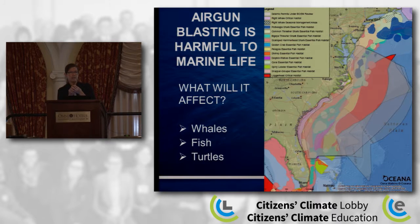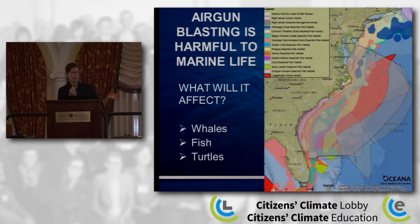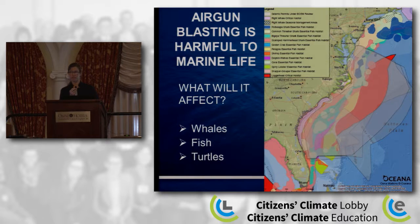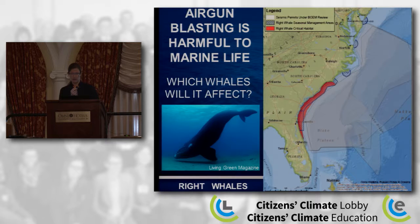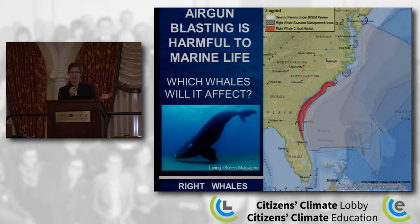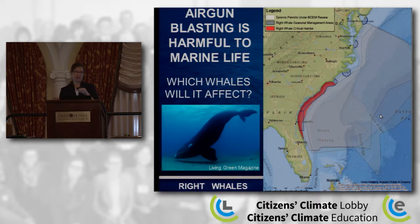This map shows areas important for marine life in the Atlantic where seismic air gun testing is proposed — the area outlined in gray is where blasting would occur if permits were approved. The colorful areas have been deemed important habitat for commercial and recreational fish, the North Atlantic right whale — an extremely endangered species — and loggerhead sea turtles, also endangered. This map shows the only known calving ground for the North Atlantic right whale, with only about 500 right whales remaining.